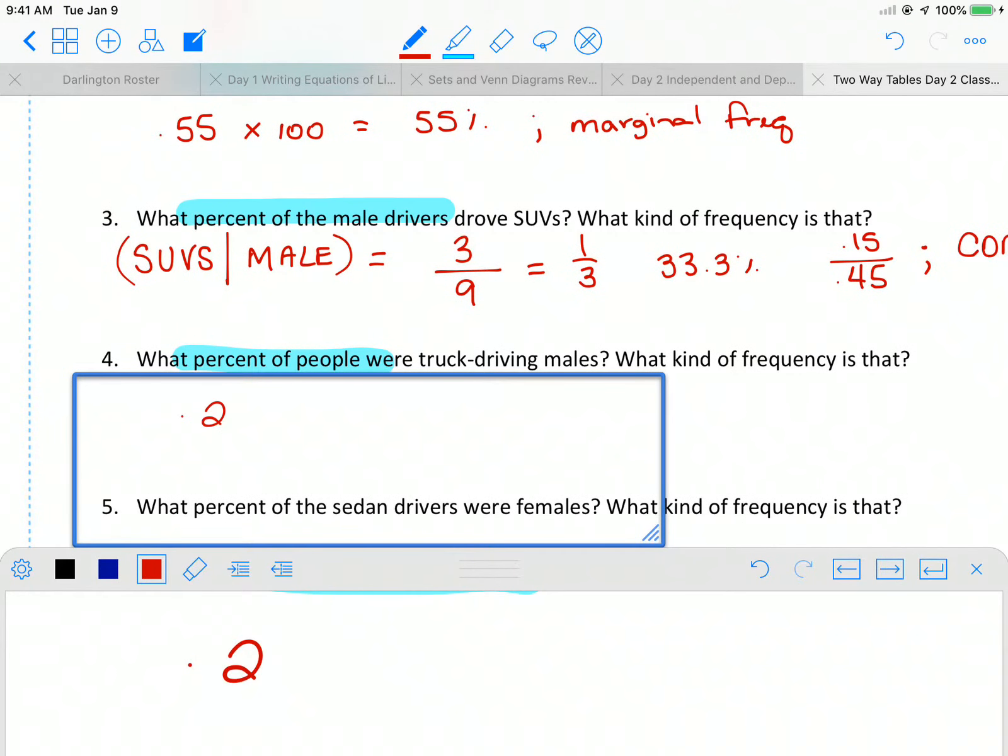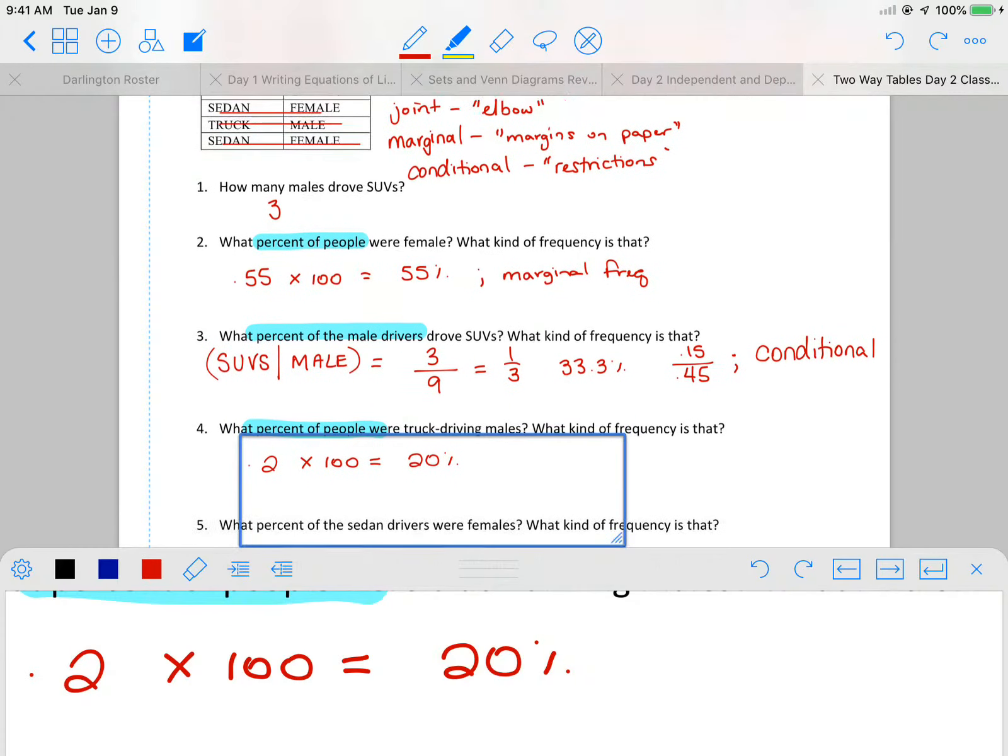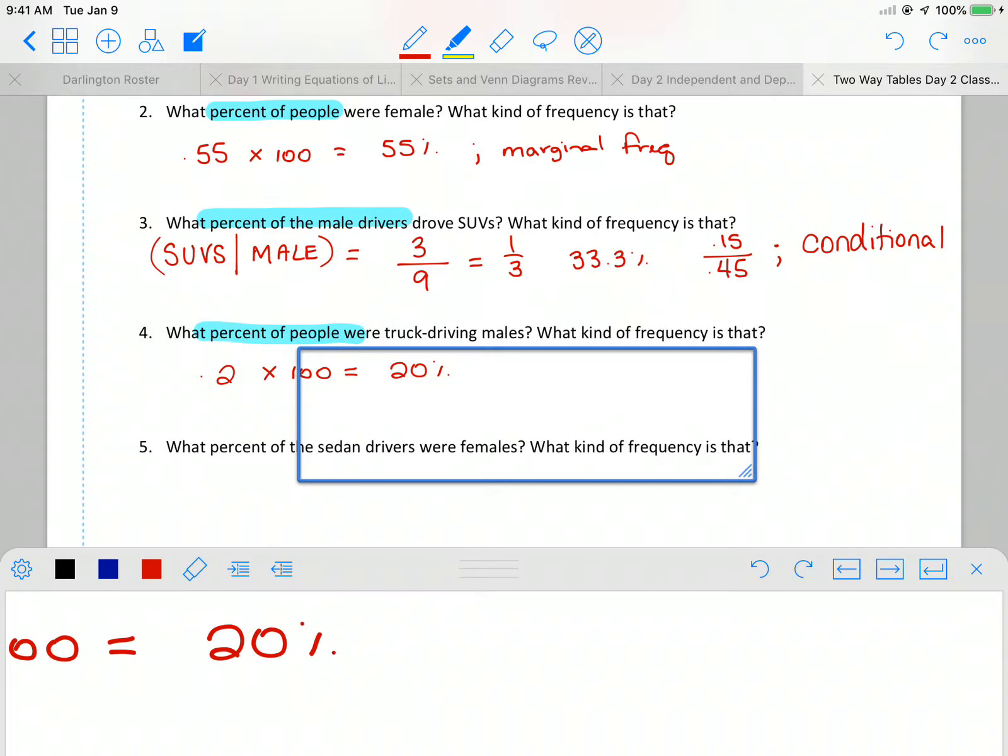And then what kind of frequency did we got? So because we got the data where male, let's see, I'll get a straight line for you guys. Male and truck crossed, okay? We're talking about that is a joint frequency. It's where the two meet, just like your elbow, your humerus bone, and your ulna. So that is a joint frequency.